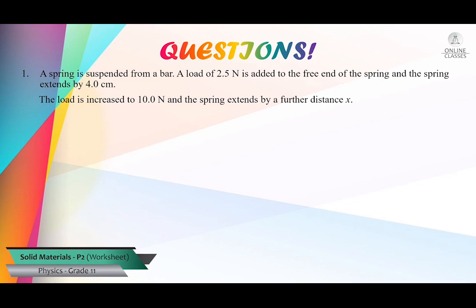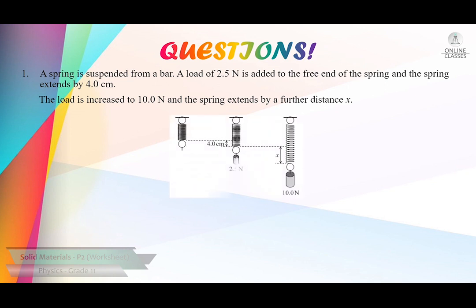Question number 1: a spring is suspended from a bar. A load of 2.5 Newton is added to the free end of the spring and the spring extends by 4 centimeters. The load is increased to 10 Newton and the spring extends by a further distance x. They change the initial force from 2.5 to 10 Newton.